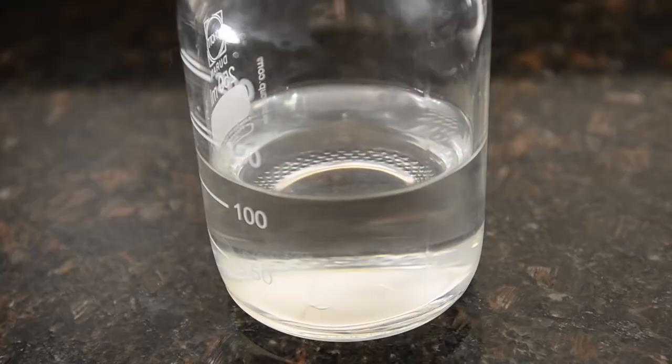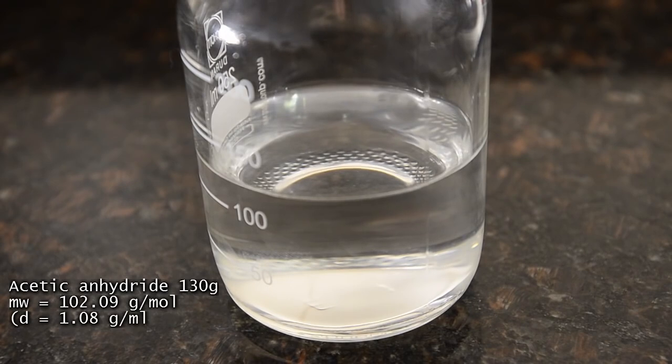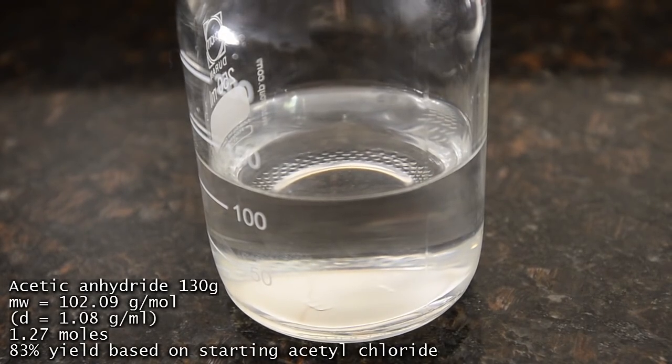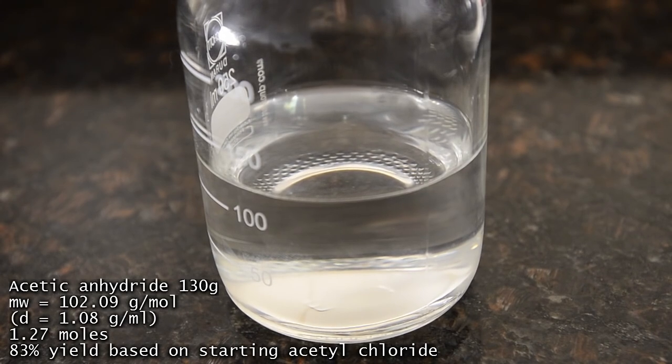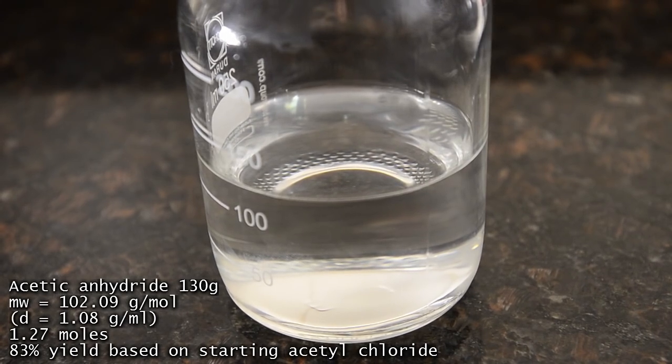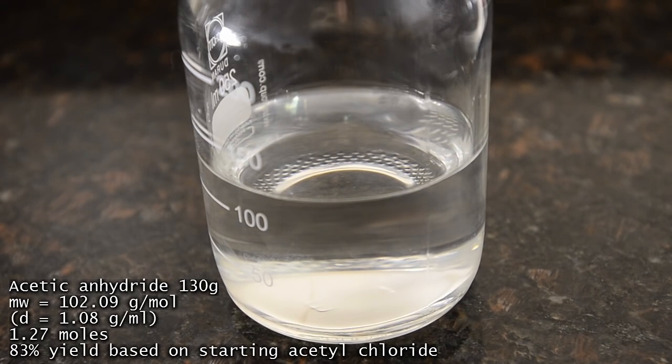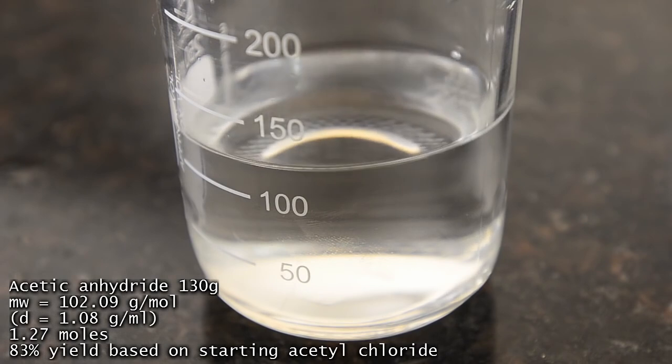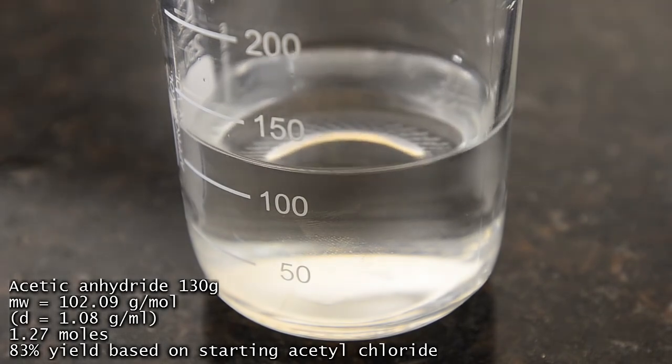Here's our final product, 130 grams of pure colorless acetic anhydride. Given that we used doubled the first reaction, this corresponds to an average yield on our first reaction of 83% based on acetyl chloride used. The product doesn't smell strongly of acetic acid.